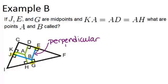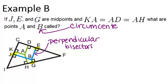which means that point B is the circumcenter of the triangle. So B is the circumcenter because it's the point where all three perpendicular bisectors intersect.